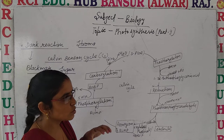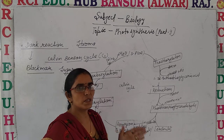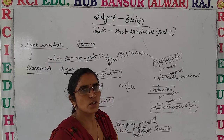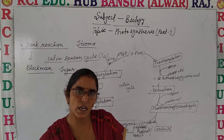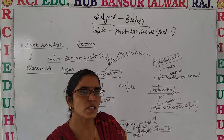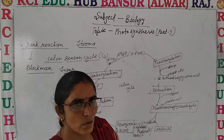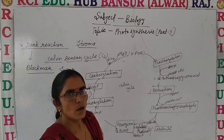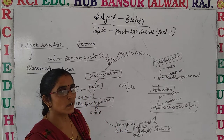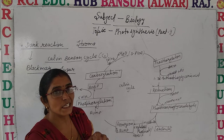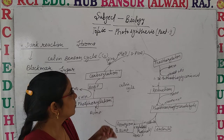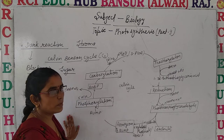During photosynthesis we have a very simple overall reaction: 6CO2 plus 12H2O gives rise to C6H12O6 plus oxygen and water. That is not as easy as it looks — it is very complicated.